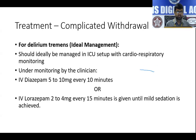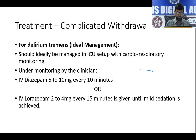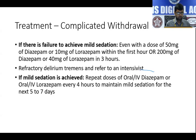Delirium tremens should ideally be managed in an ICU with cardiorespiratory monitoring. IV diazepam 5 to 10 mg every 10 minutes up to one hour, or IV lorazepam 2 to 4 mg every 15 minutes, with the endpoint being mild sedation. If mild sedation is not achieved with 50 mg of diazepam or 10 mg of lorazepam within one hour, this is considered refractory delirium tremens and requires referral to an intensive care unit. If mild sedation is achieved, repeat doses of oral or IV diazepam every four hours can maintain sedation for the next five to seven days.